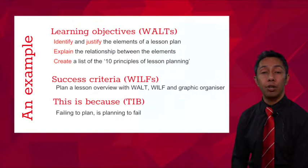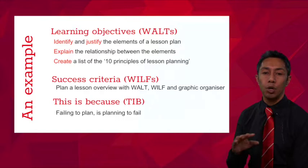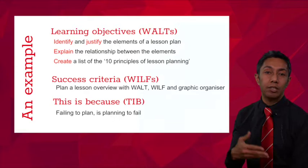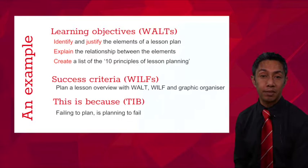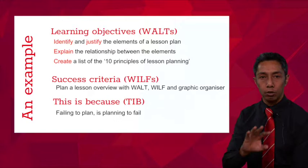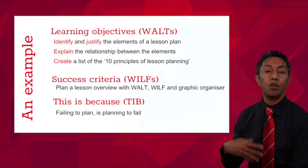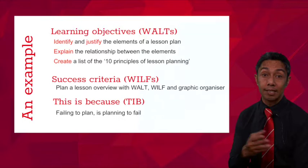So this is the way that WALTs, WILFs, and a third category called TIBs work. In some schools they're referred to as WALTs, WILFs and TIBs. Generally when we write a lesson, we start with our learning objectives, we include something called success criteria, and in some schools there's a requirement that you tell students why they are learning a particular piece of content — that's the purpose of the TIBs. Within a theoretical lesson, students might be asked to identify and justify elements of a lesson plan, explain relationships between elements, and create a list of the top 10 principles of lesson planning. We'll talk more about the explicit relationship between learning objectives and success criteria shortly.